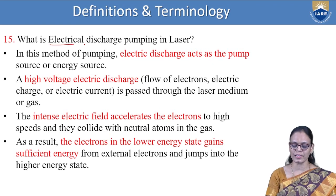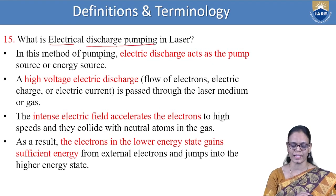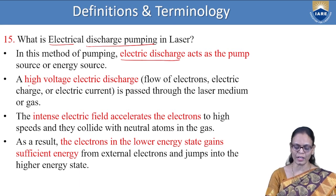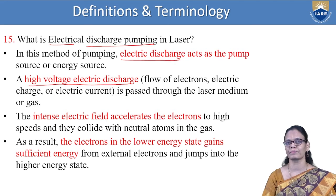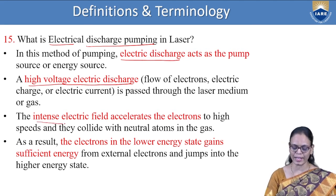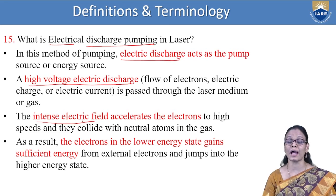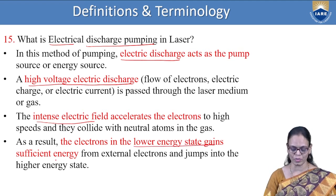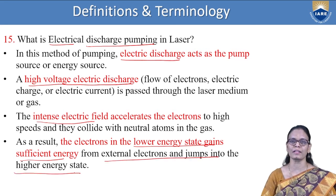What is electrical discharge pumping? In this method, electric discharge acts as the pump or source. A high-voltage electric discharge is passed through the laser medium — the intense electric field accelerates the electrons and they collide with other atoms in the gas. Due to these collisions, there is a transfer of energy, and the atoms in the lower state gain energy and go to the higher energy level. This is how pumping occurs, and we call it electrical discharge pumping.